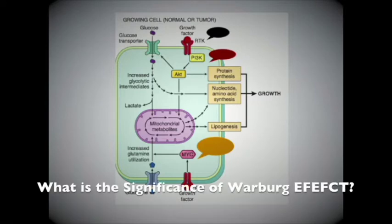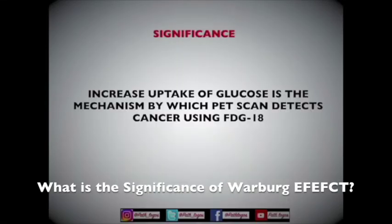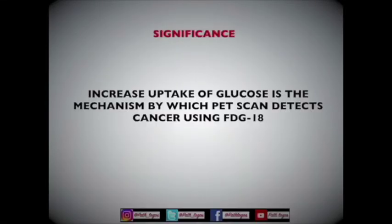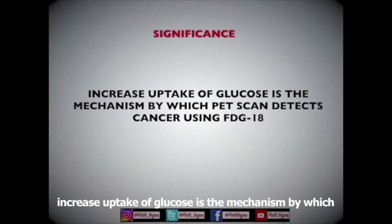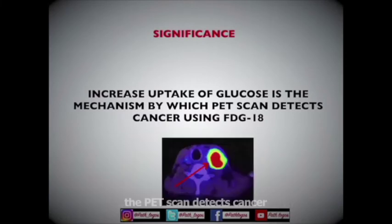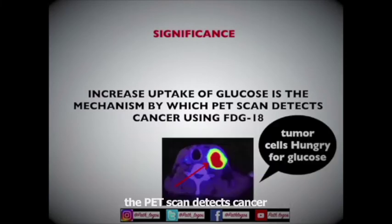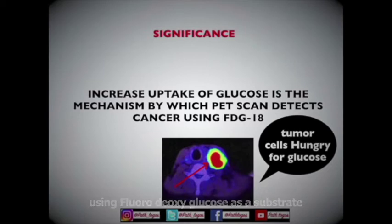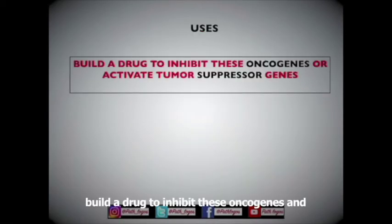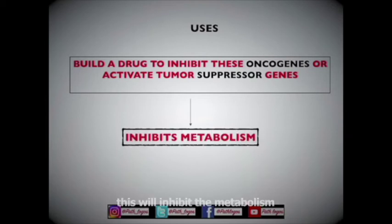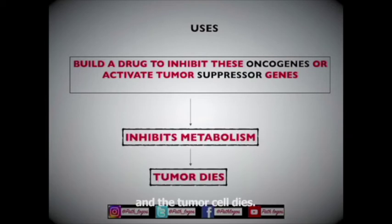What is the significance of the Warburg Effect? Increased uptake of glucose is the mechanism by which the PET scan detects cancer, using fluorodeoxyglucose as a substrate. The other important significance is to build a drug to inhibit these oncogenes or activate the tumor suppressor gene, which will inhibit the metabolism and cause the tumor cell to die.